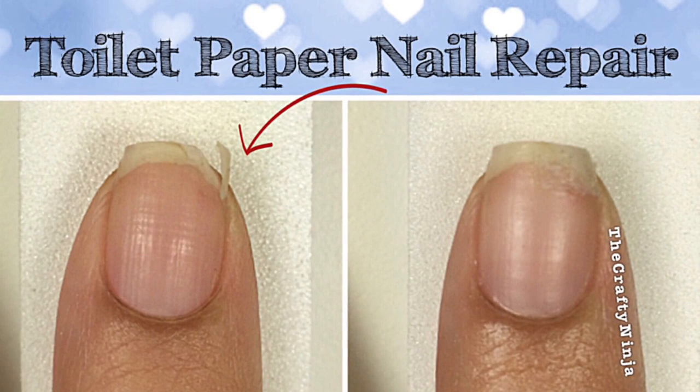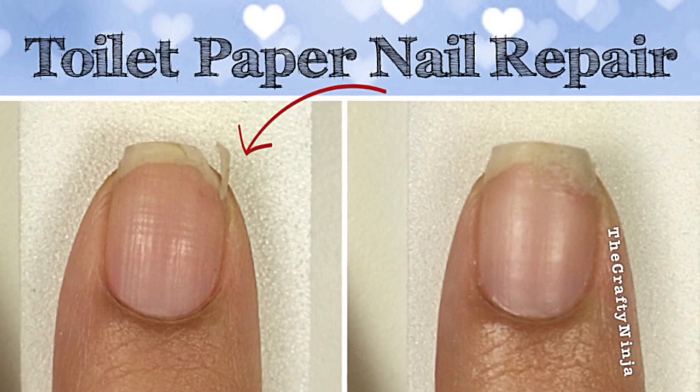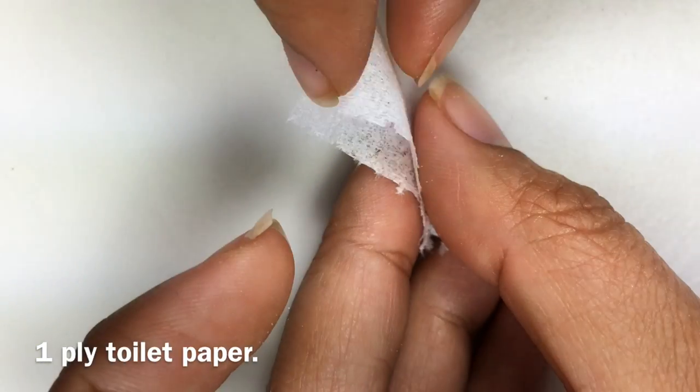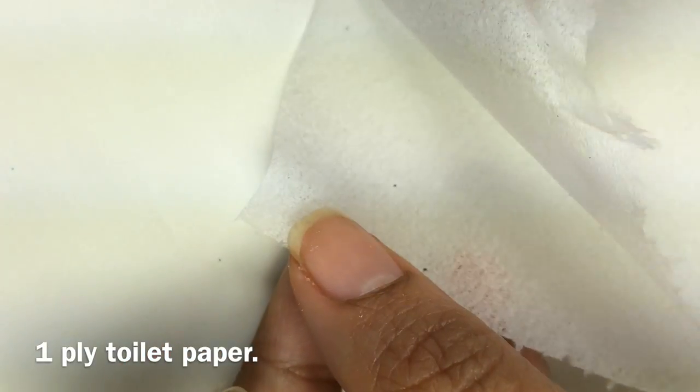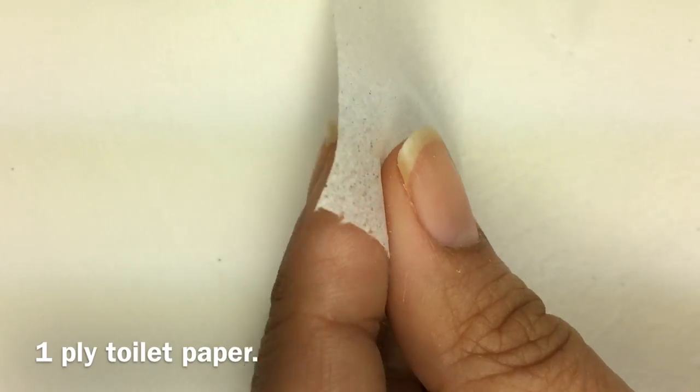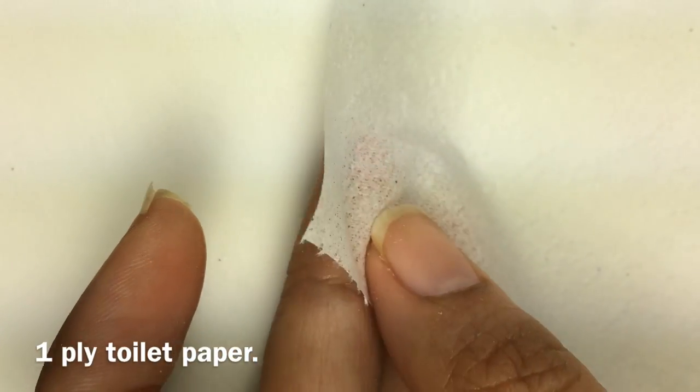Hey guys, this is my toilet paper nail repair. Due to the winter weather, my nails have been so brittle and breaking easily. I used a piece of toilet paper and peeled it down to one ply.